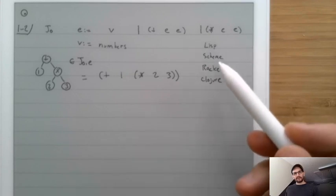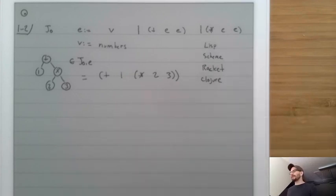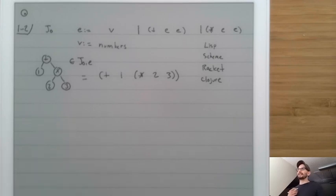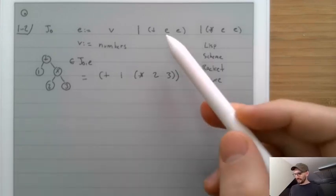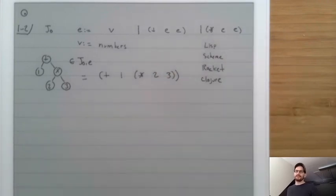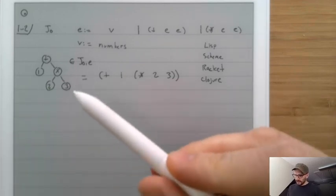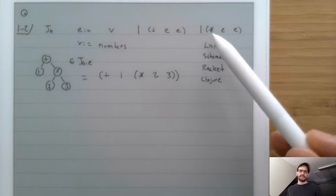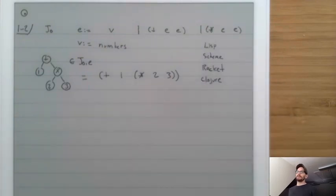The reason those languages have this syntax is essentially because it has some uniformity properties that are nice. We're using this notation because it is quick to write down and allows us to not focus very much on parsing. A tree like this E data type can be turned into a data structure in our programming language. For example, suppose we were going to write an implementation of this language in Java.